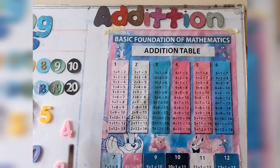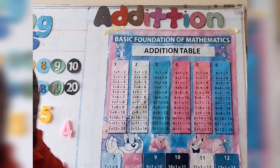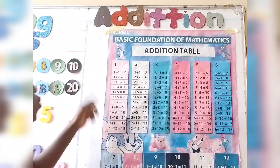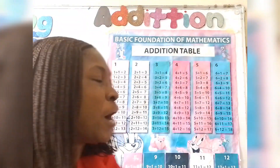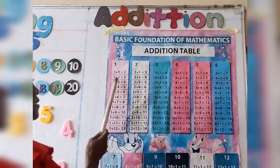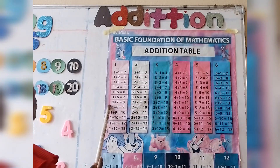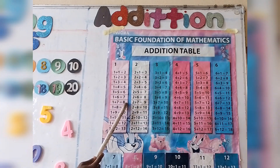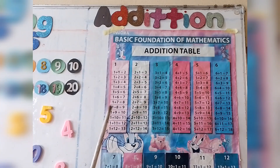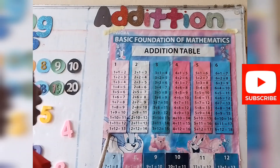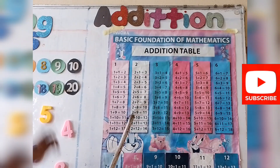Knowing that when you add one to one, what you have is two. One to two gives you three. One plus three gives you four. One plus four gives you five. One plus five gives you six. One plus six, seven. One plus seven, eight. One plus eight, nine. One plus nine, ten. One plus ten, eleven. One plus eleven, twelve. One plus twelve, thirteen.